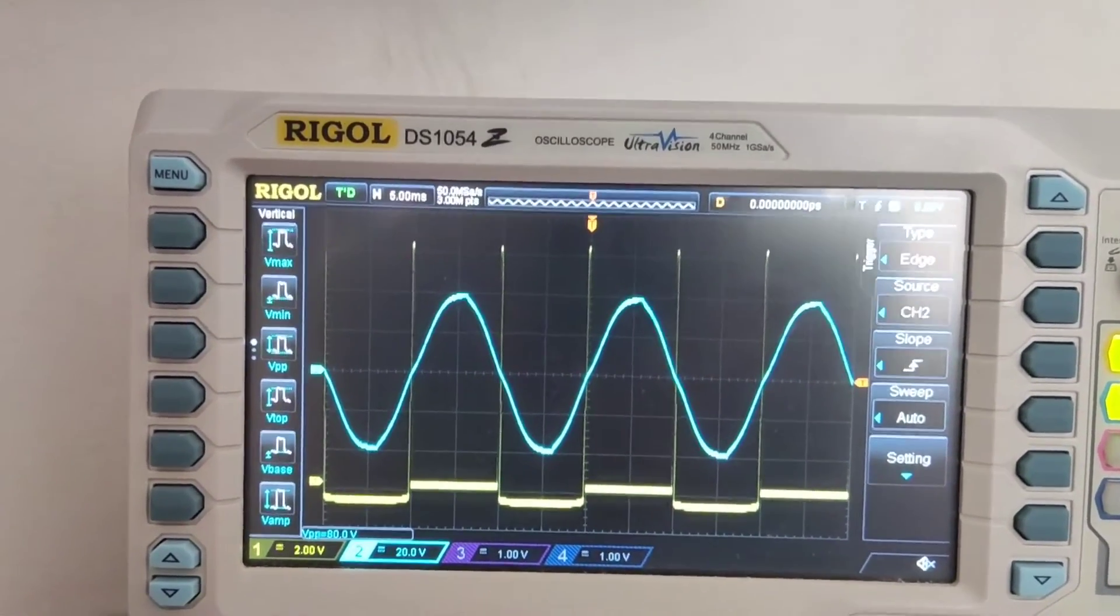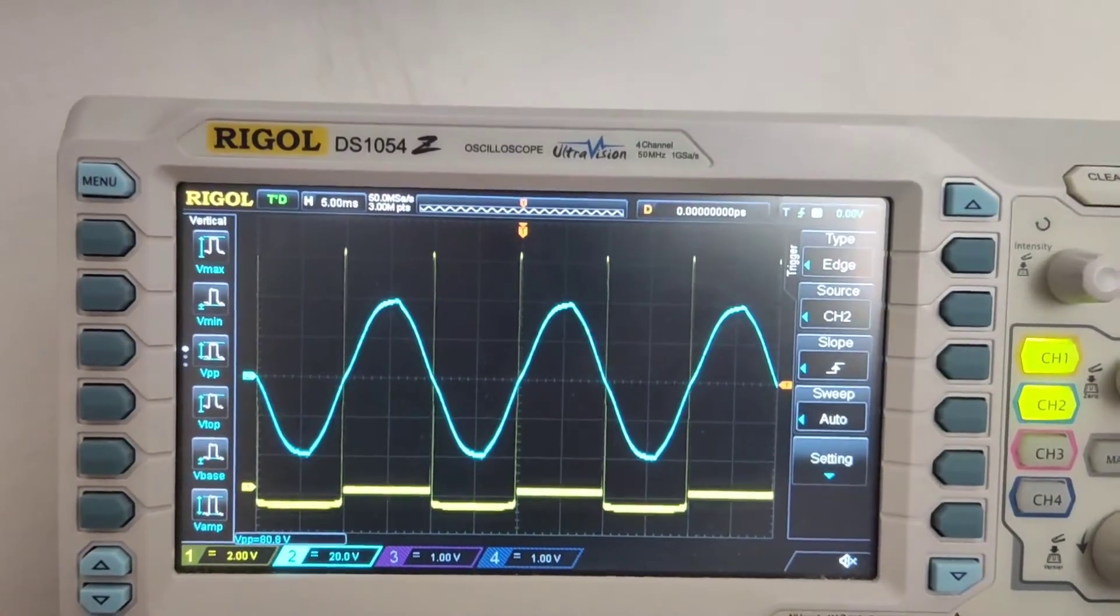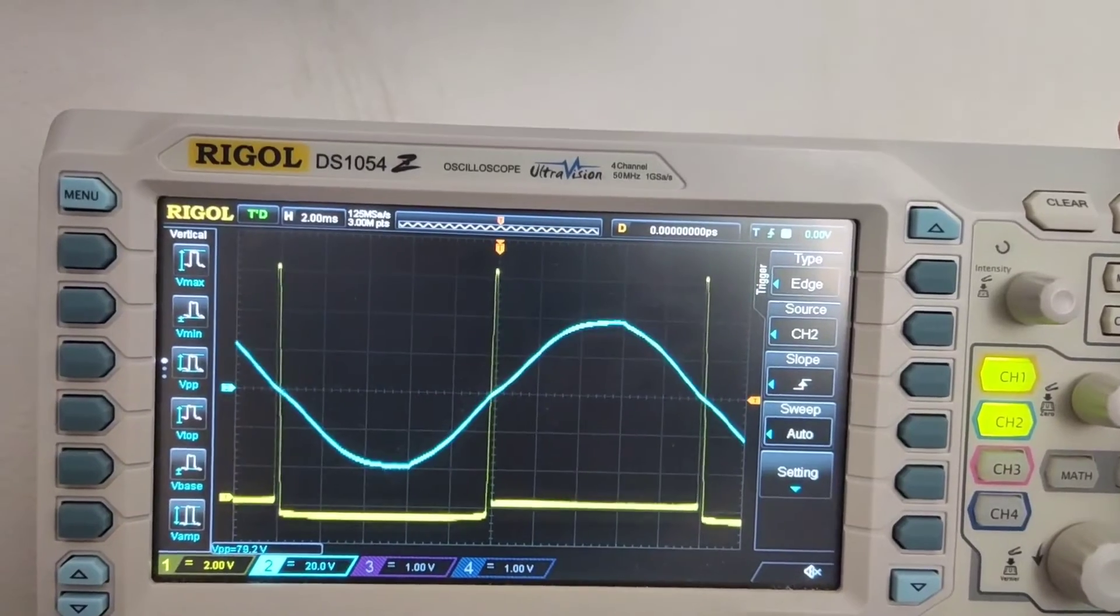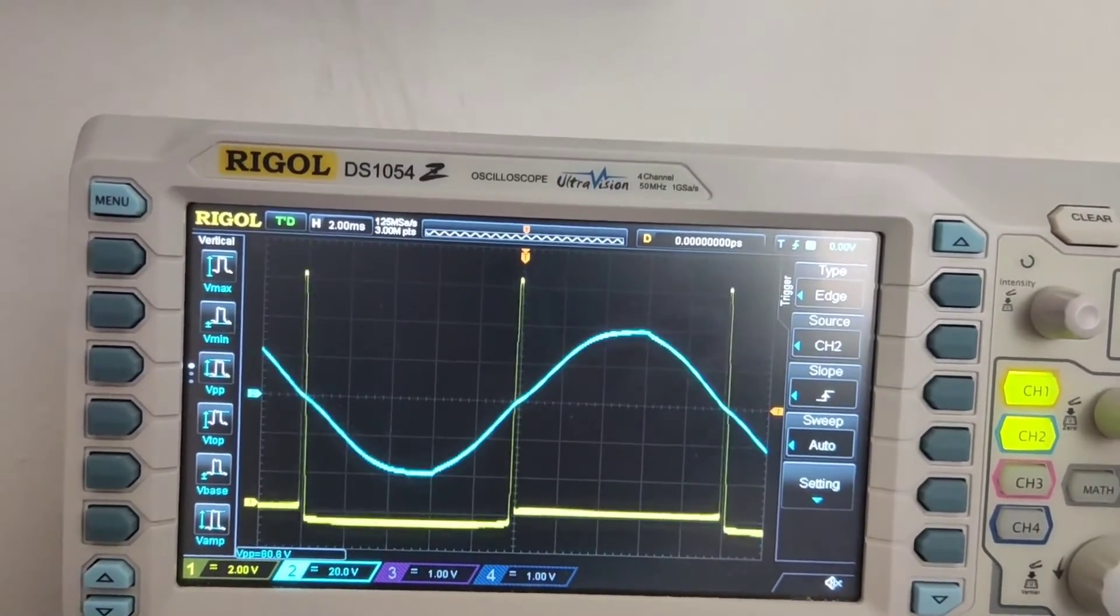The yellow trace here is the output of the circuit. Okay, wonderful. You can see that when the AC voltage passes through zero, we have a pulse.